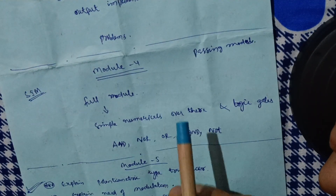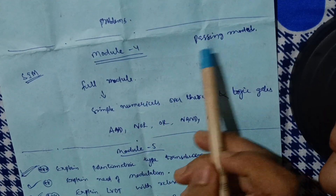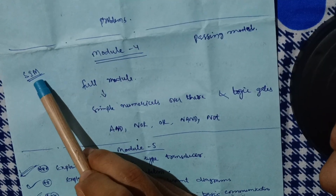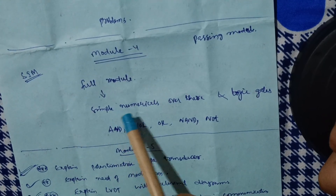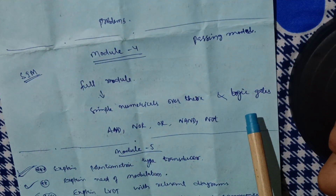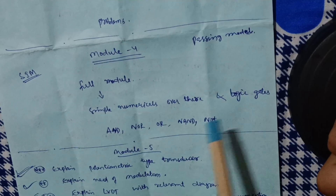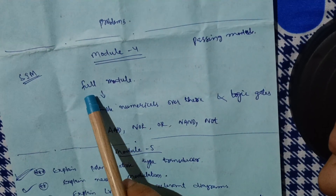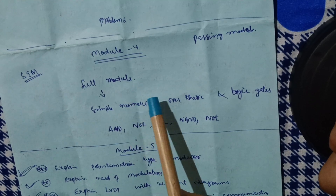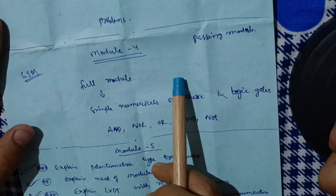Then module four — I am calling this the passing module, my dear friends. You have to go through the full module. This is a super important module. It consists of simple numericals and logic gates. You may already be familiar with AND gate, NOR gate, and OR gate — it is a 12th class concept, so it is very easy to write. Some numericals in module four are also easier ones. These 20 marks are just in your hand.